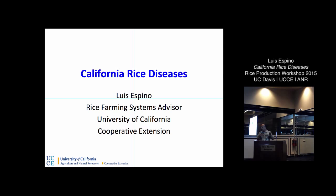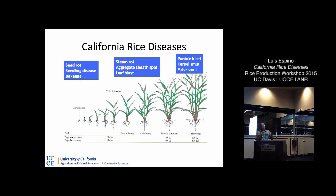This is an outline of when these diseases appear. The main ones appear during the seedling stage. We have a couple that happen during vegetative growth, and during the panicle maturation stage we have blast. Then there are a couple of really minor diseases that I'll mention at the end of the talk.